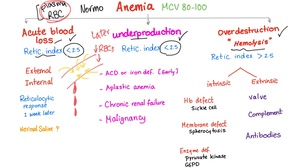Later, when plasma is replaced from the interstitium going into the blood vessel, we have more plasma than RBCs. This dilutes the RBC count, resulting in normocytic anemia — you will have decreased RBC count, decreased hemoglobin, and decreased hematocrit.